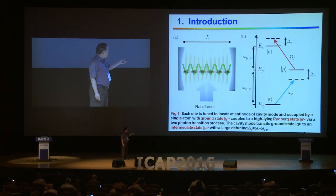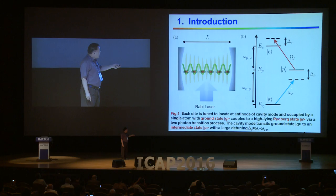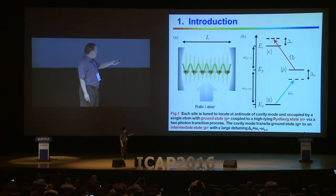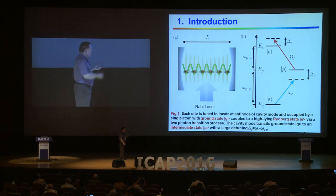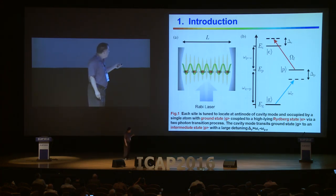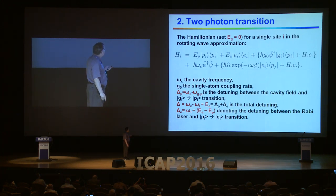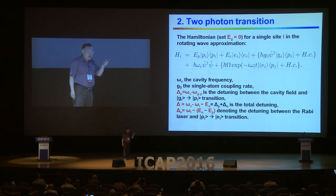The Rydberg atoms are basically three-level atoms. These are ground states with energy E_g. These are intermediate states P. Here is the excited states. We can use ω_c with detuning Δ_P to get the transition between the ground states and the intermediate states. We can also use ω_L with detuning Δ_E for the transition between the intermediate states and the excited states. The energies are E_g, E_p, and E_e.